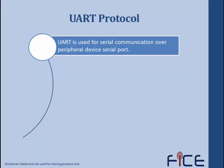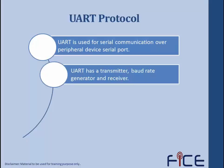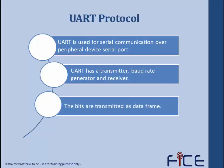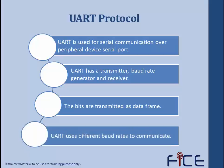UART is used for serial communication over a peripheral device serial port. If any peripheral device needs to communicate through a serial port, it uses a UART. UART has a transmitter, a baud rate generator, and a receiver. Bits are transmitted in a data frame format — when the transmitter is transmitting data, it always transmits in a data frame. UART uses different baud rates to communicate, but the baud rate of the receiver and transmitter should always be the same.